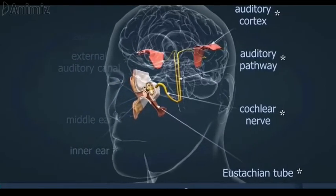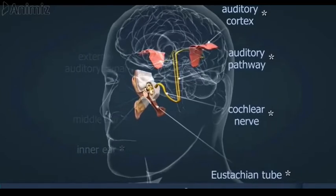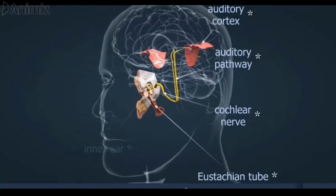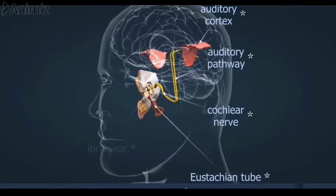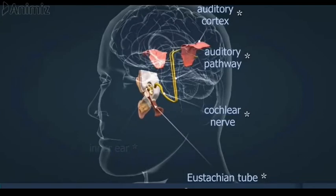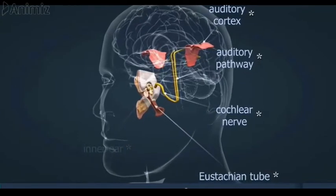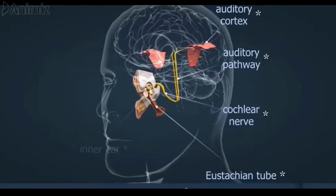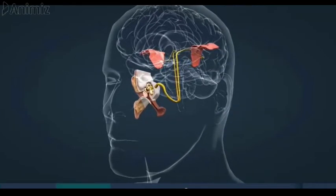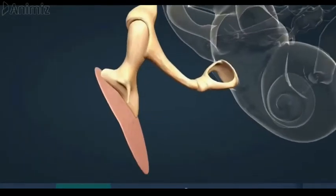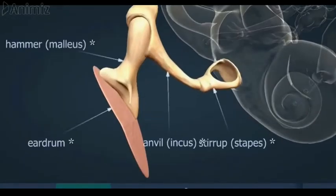The malleus connects to the eardrum linking it to the outer ear, and the stapes, the smallest bone in the body, connects to the inner ear. The inner ear has both hearing and balance organs. The hearing part of the inner ear is called the cochlea, which comes from the Greek word for snail because of its distinctive coiled shape.